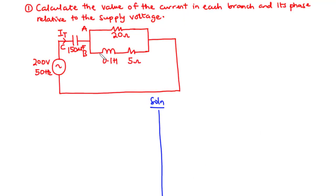We have impedances in each of the branches. In branch A, we have a 20 ohm resistor. In branch B, we have a 0.1 Henry inductor and also a 5 ohm resistor. In branch C, we have a 150 microfarad capacitor. Let's find the impedances of each of the branches, and then we can add them up to get the total impedance of this circuit.